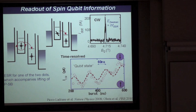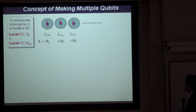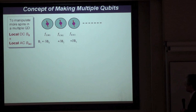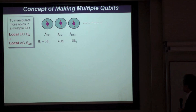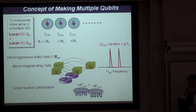Now, let's move on to how to implement two spin qubits or multiple qubits. The idea is quite simple: we make the DC magnetic field local as well. The local magnetic field is then different from dot to dot, which means the electron spin resonance frequency must be different from dot to dot. So the two spins can be distinguished — and not only two, but many spins.